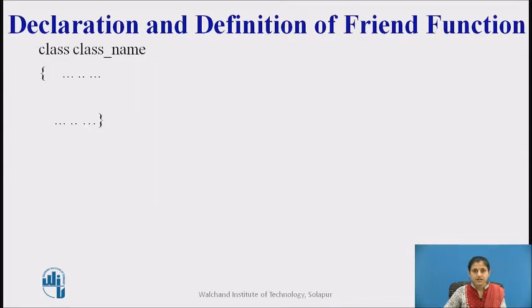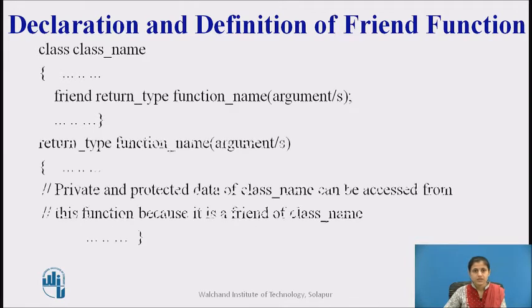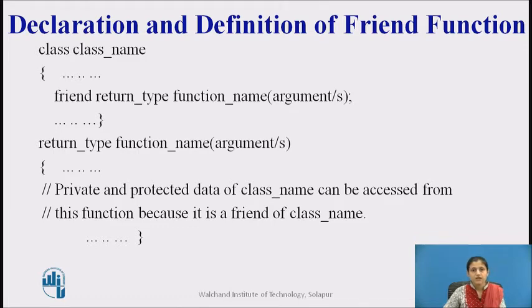To declare a friend function, include its prototype within the class, preceding it with the keyword friend, as shown in the slide. The function is defined elsewhere in the program like a normal C++ function, and the function definition does not use the keyword friend. A function can be declared as a friend in any number of classes. A friend function, although not a member, has full access rights to the private data members of the class.